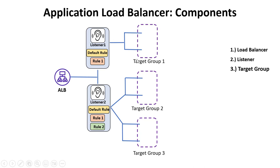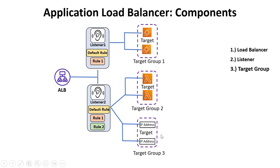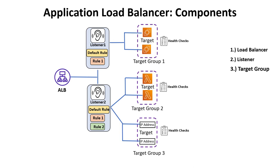The next piece of the puzzle is the Target Group. Target groups route requests to the individual registered targets — those could be your EC2 instances, Lambda functions, or IP addresses. You can also configure health checks on each target group. They perform health checks on each registered target to see whether the target is in a healthy state to receive traffic or not.